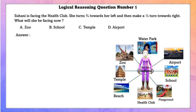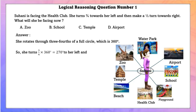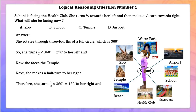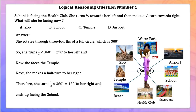Logical reasoning question number 1. Suhani is facing the health club. She turns 3/4 towards her left and then makes a 1/2 turn towards right. What will she be facing now? She rotates 3/4 of a circle, which is 270 degrees to her left — now she faces the temple. Next she makes a half turn to her right, which is 180 degrees, and she ends up facing the school.